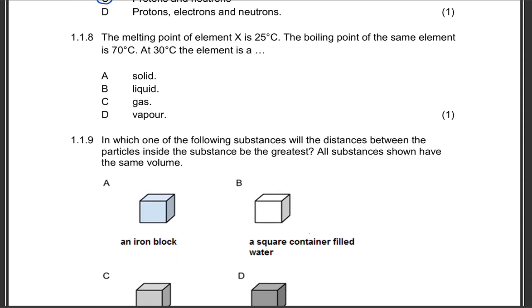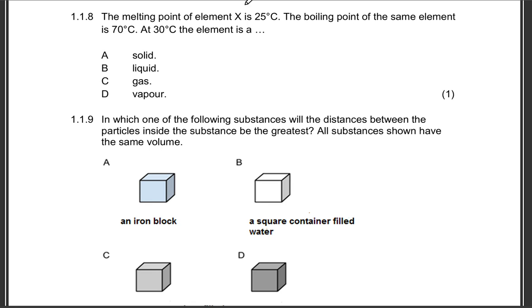Question 1.1.8: The melting point of element X is 25 degrees Celsius. The boiling point of the same element, which is element X, is 70 degrees Celsius. At 30 degrees Celsius, the element is what? Let's break it down. The melting point, 25 degrees Celsius. The boiling point, 70 degrees Celsius. So at 30 degrees Celsius, is the element a solid, a liquid, gas, or a vapor? It will be a liquid.